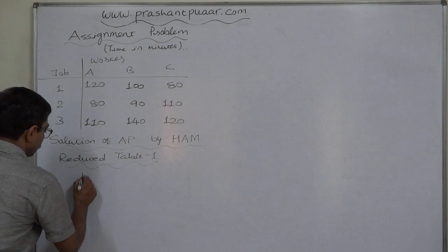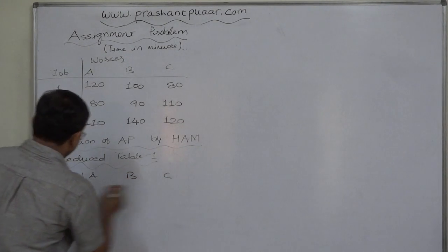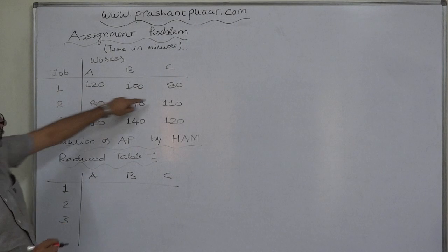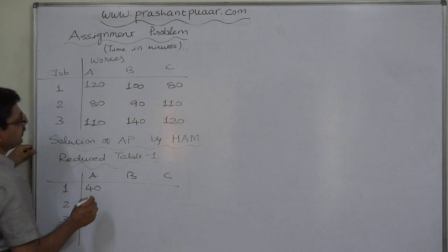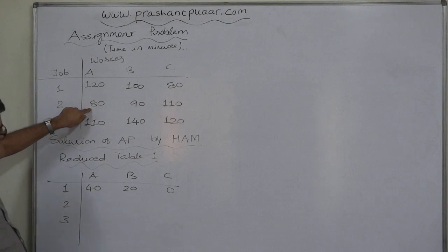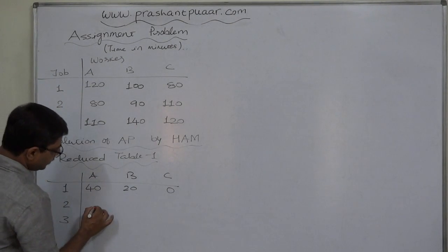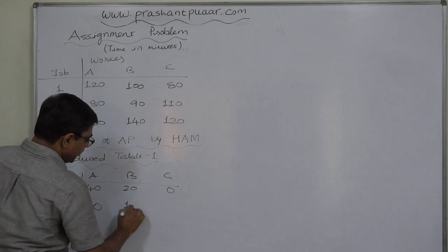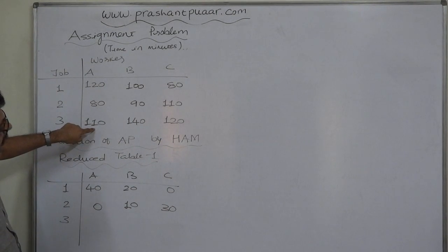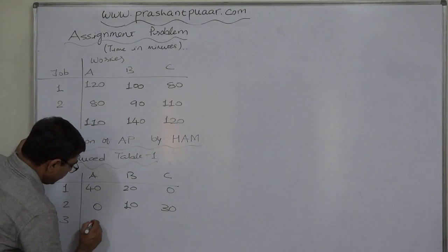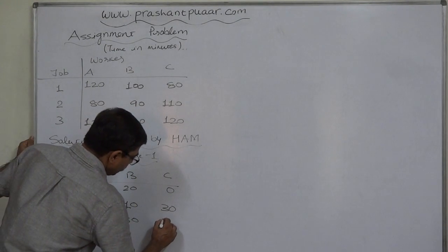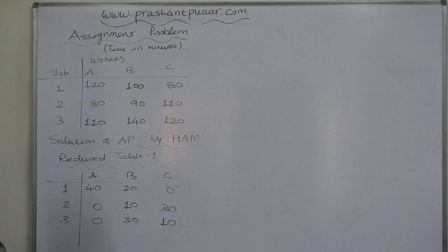Subtracting the lowest value of each row from all values: 80 is the lowest value in the first row. 120 minus 80 is 40, 100 minus 80 is 20, 80 minus 80 is 0. In the second row, the lowest value is 80: 80 minus 80 is 0, 90 minus 80 is 10, 110 minus 80 is 30. In the third row, the lowest value is 110: 110 minus 110 is 0, 140 minus 110 is 30, 120 minus 110 is 10. The formula is: row value minus the row minimum.